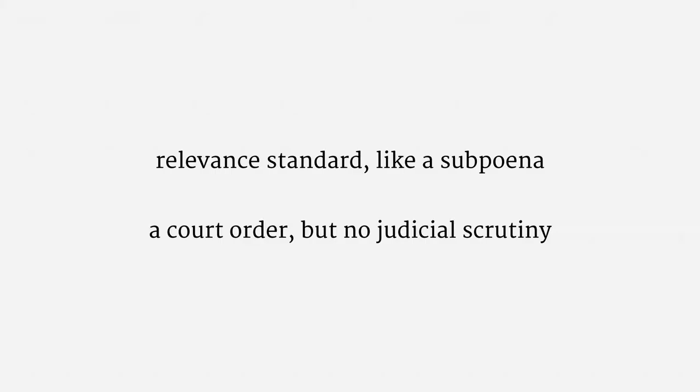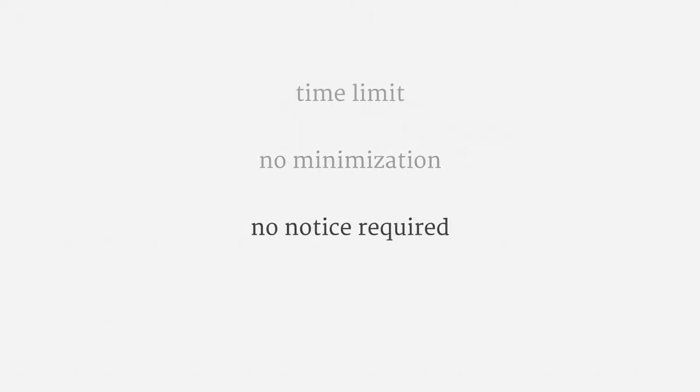Let me touch on a few other features of the Pen Register Act. It requires a time limit on pen trap orders — at most 60 days. The orders can be renewed, of course. Unlike the Wiretap Act, there is no minimization requirement in the Pen Register Act. Officers get access to all of a target's prospective call records. There also isn't a notice requirement. Pen trap orders are sealed when they're issued, and in practice, they're barely ever unsealed.